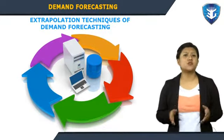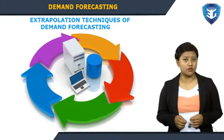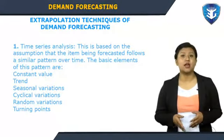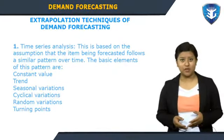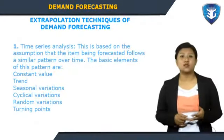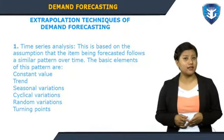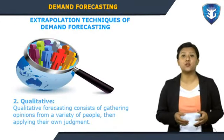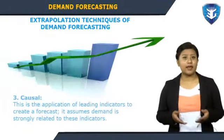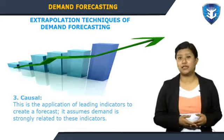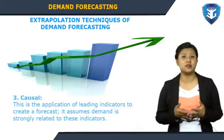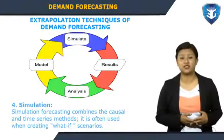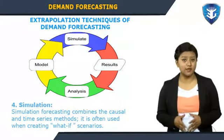There are numerous techniques of demand forecasting that can be used to control inventory. Time series analysis is based on the assumption that the item being forecasted follows a similar pattern over time; its basic elements include constant value, trend, seasonal variations, cyclical variations, random variations, and turning points. Qualitative forecasting consists of gathering opinions from a variety of people then applying their own judgment. Causal forecasting applies leading indicators to create a forecast. Simulation forecasting combines the causal and time series methods and is often used when creating what-if scenarios.